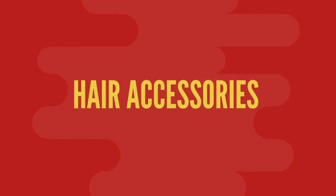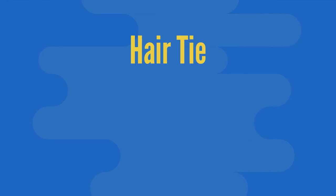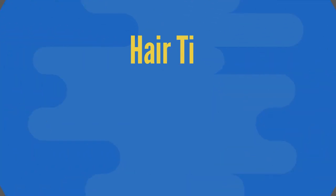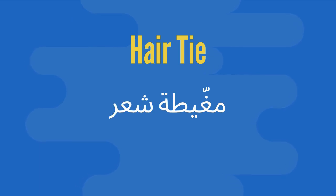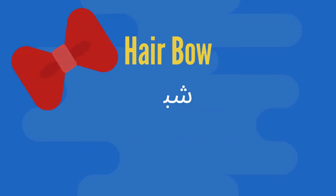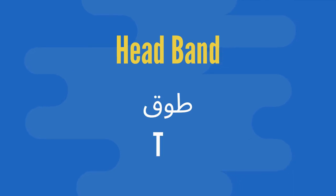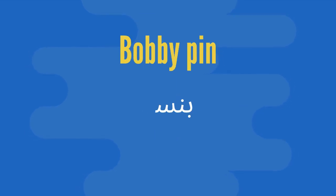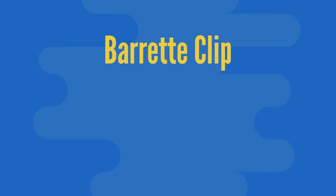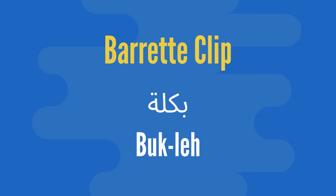Now let's dive into some hair accessories. A hair tie is 'rabtat sha'r', 'rabtat sha'r' — it can also be called 'lastik', 'lastik', which literally translates to rubber band. A hair bow is 'shabara', 'shabara'. A headband is 'tal', 'tal'. A bobby pin is 'pinsay', 'pinsay'. And a barrette clip is 'bukle', 'bukle'.